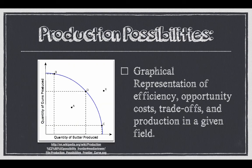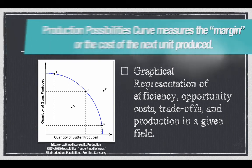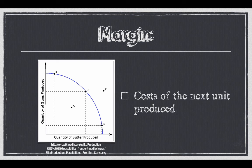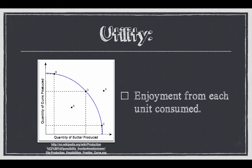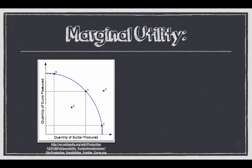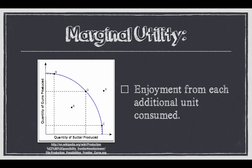The production possibility curve shows us efficiency, opportunity cost, trade-offs, and production in a given field. We use the example of guns versus butter. Going from point B to point D, we're producing more butter and less guns — you can see the trade-off. Margin is the idea of the next unit produced. Utility is the enjoyment from each unit consumed. Marginal utility is the enjoyment from each additional unit consumed — we did the cookie experiment to discuss this.